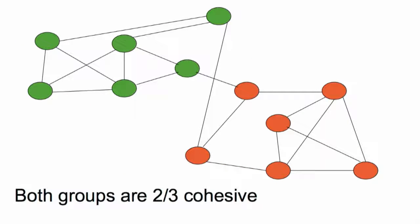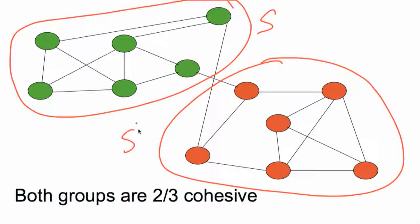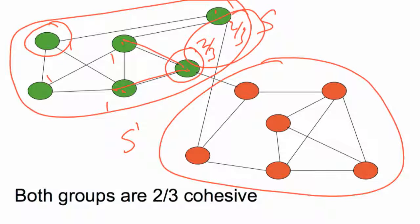Here's an example of a network with a set S and another set S prime. Both S and S prime are two-thirds cohesive. For set S: all of one person's neighbors are in the set; this individual has exactly two-thirds of their neighbors in the set — two neighbors in, one neighbor out. Everyone else has fraction one. So the cohesiveness of this set is two-thirds, the maximal level at which everyone has at least that fraction of their friends inside the set. Similarly, S prime also has two-thirds cohesiveness.